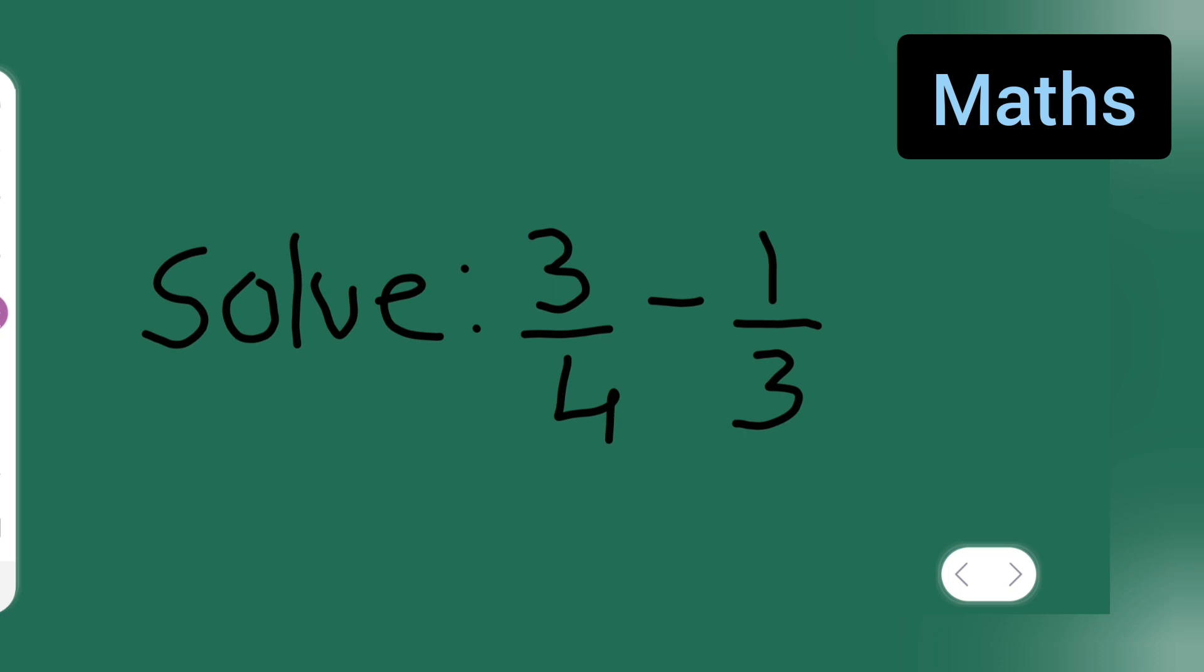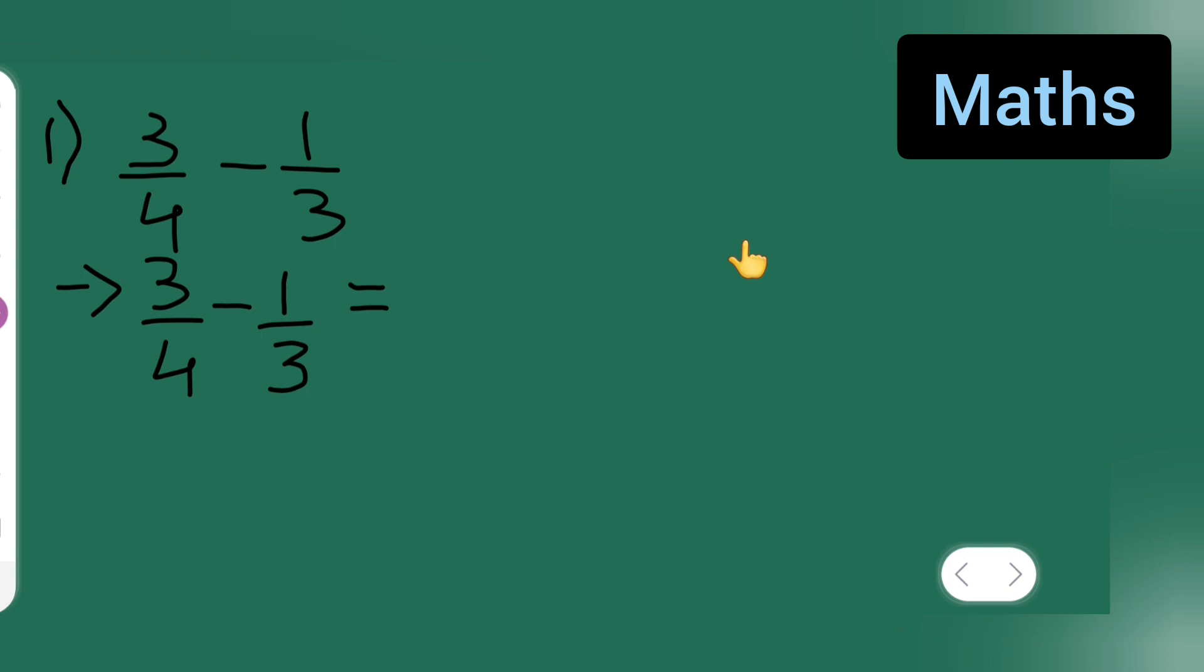So in this case, what you need to do is when the denominators are different, write this 3 upon 4 minus 1 upon 3 and take the LCM of these two numbers. So LCM of these two numbers will be 12, right? 3 fours are 12.